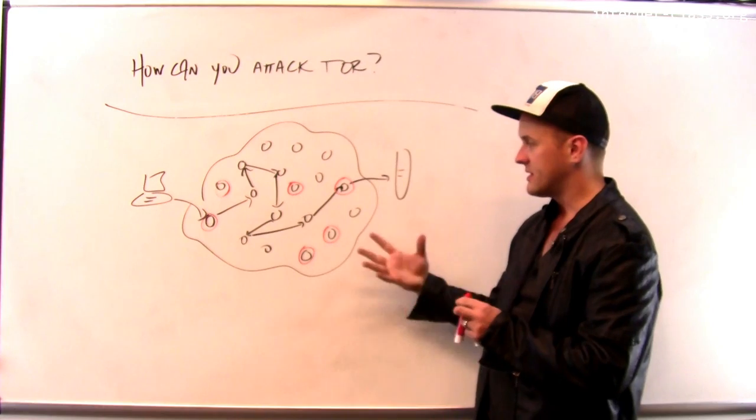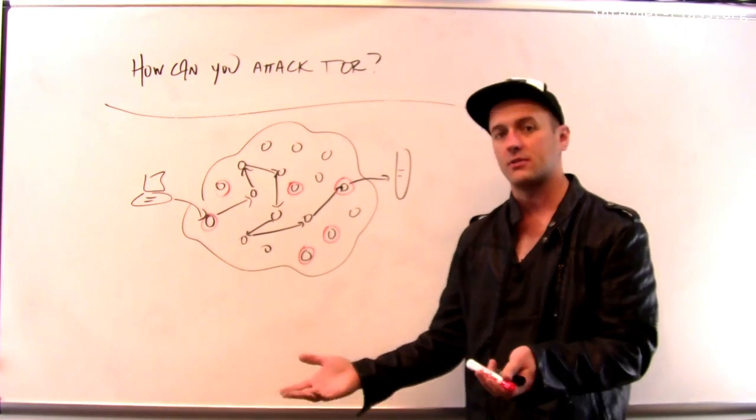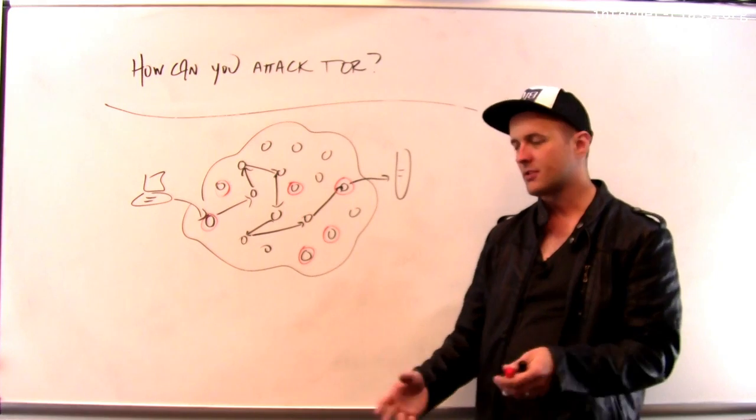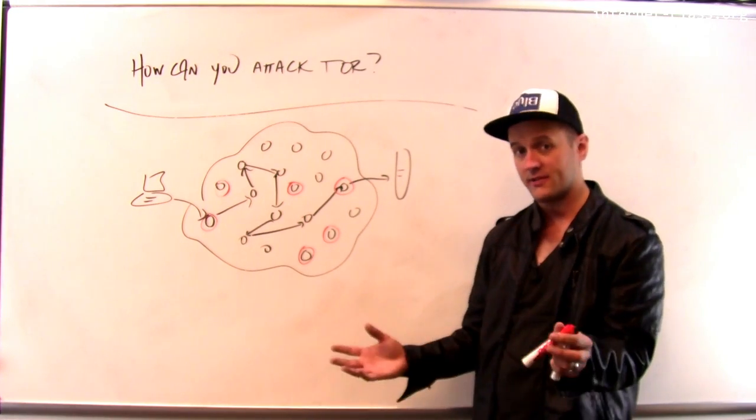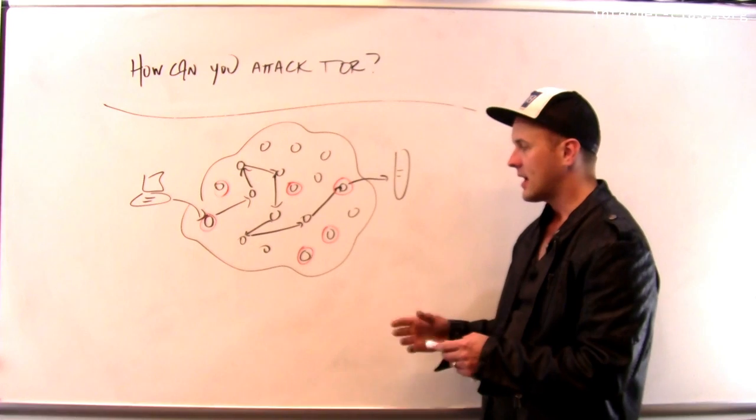The researchers that did this essentially accomplished this by creating a bunch of nodes and having them join the Tor network. And over time, they built up a reputation within the network that they were trusted, but these nodes were actually colluding with each other. And what does that allow me to do?